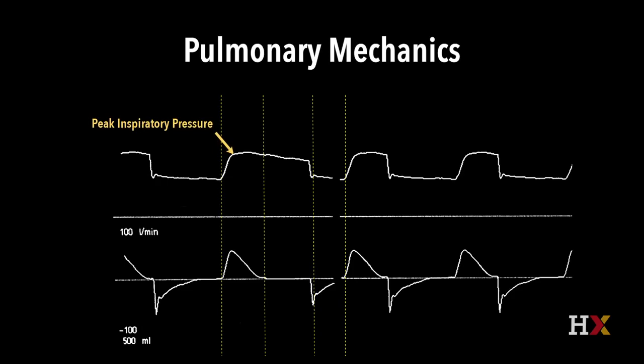We can use the ventilator to help us determine whether a patient has more of a resistance problem or a compliance problem, or sometimes both. The first point to look at is the peak inspiratory pressure (PIP) — the top pressure for any breath. When we're talking about the peak inspiratory pressure, we're looking at factors that involve both resistance and compliance alike. Compliance is measured by the plateau pressure, determined by doing an inspiratory hold: we stop all flow so there's no resistance, and what's left behind is a measure of compliance.